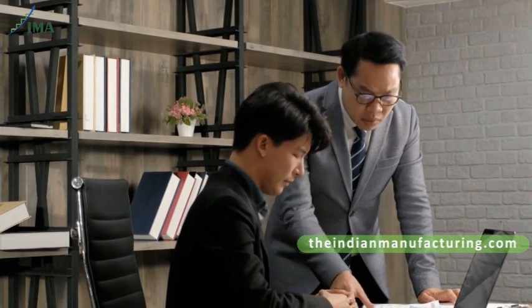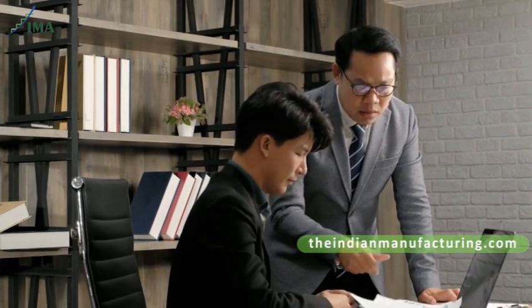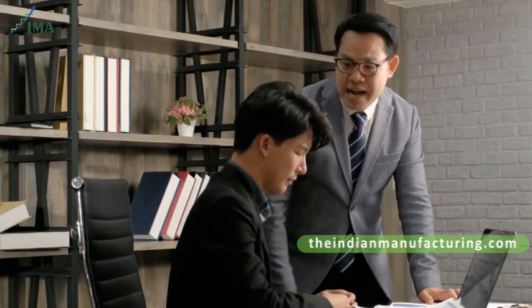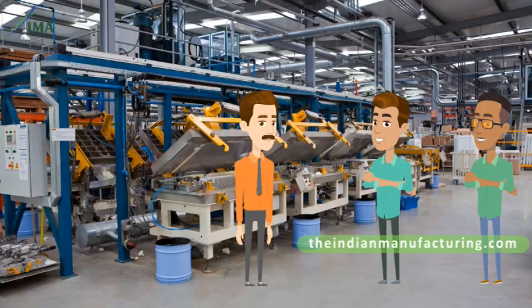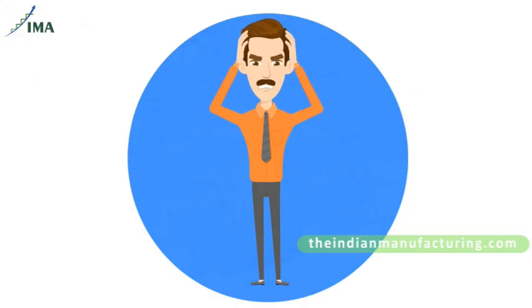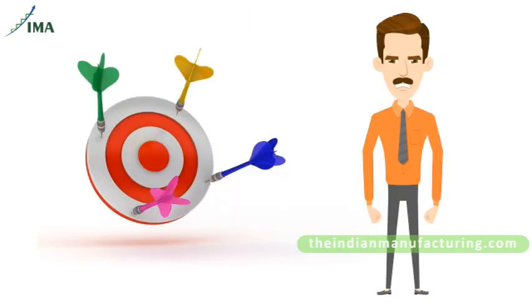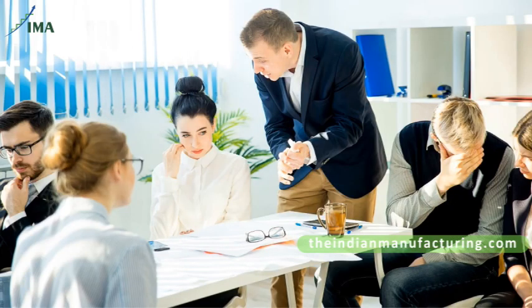Amar also expects very high standards of work from his colleagues. If they are not able to meet his standards, he gets angry with them. Sometimes he gets angry with himself that he is not able to train them to the required standards. This way Amar's anger is not just aimed at others — it is aimed at himself too. If the results are not as per his expectations, he does not spare even himself. Amar's colleagues are suffering his anger, but they know that even Amar himself is suffering.